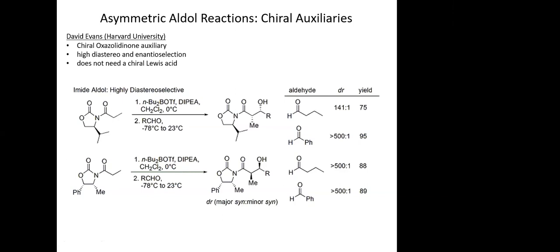Looking at the product with this chiral auxiliary and the isopropyl group, you get a specific stereoisomer where both the methyl group and the hydroxyl group are pointed back. Based on the aldehyde you use — I just have RCHO because they probed the scope — with an aliphatic aldehyde you can get greater than 500:1 diastereomeric ratio, which is awesome. That gives a greater than 500:1 syn-to-anti ratio in good yields.